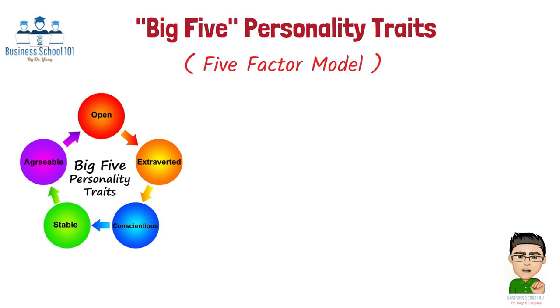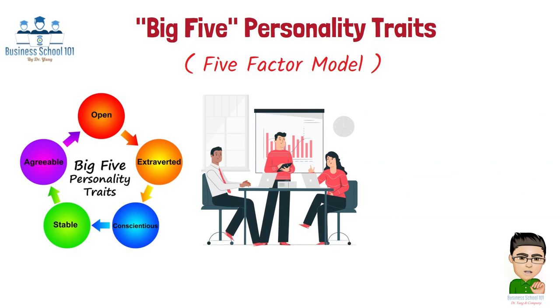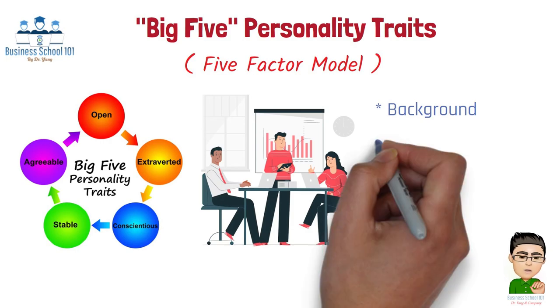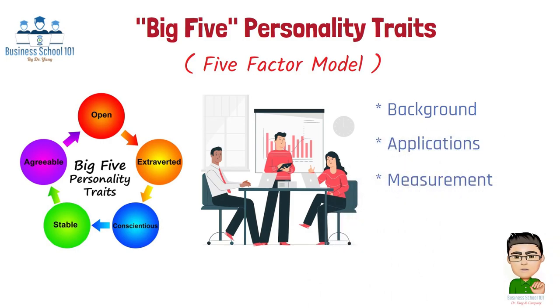It identifies five broad dimensions that capture the most significant and stable variations in human personality traits. So what are the Big 5 Personality Traits? How should we apply the model and measure those personality traits? Do they have some limitations? In this video, I will discuss these questions with you.